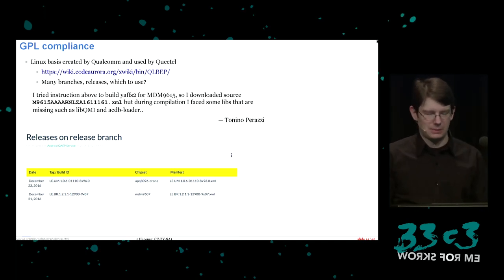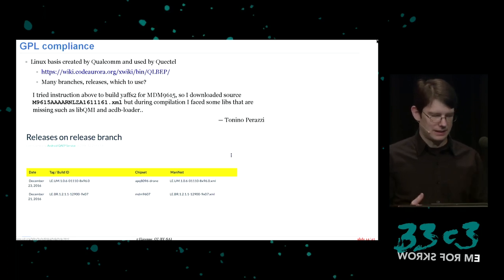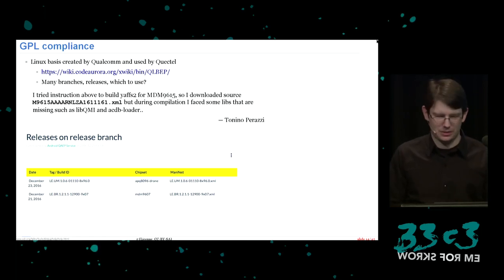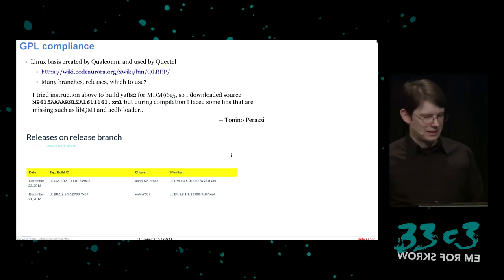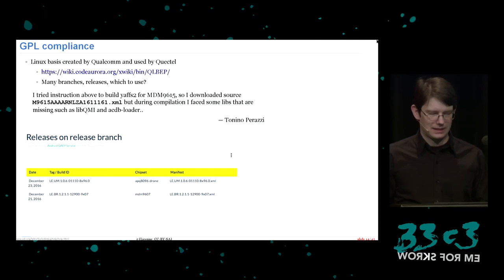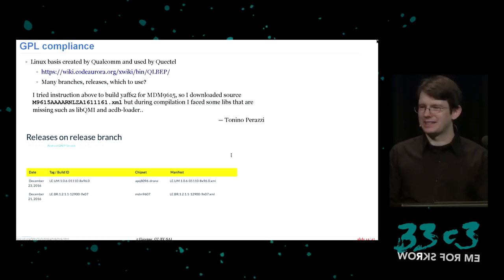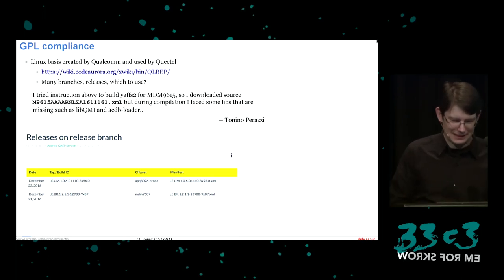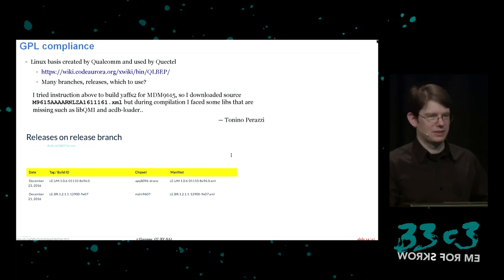Qualcomm's source at Code Aurora is almost completely undocumented — there are hundreds of branches and tags with no documentation on what to use. They have an example version you can build, but someone posted years ago that it doesn't compile and of course nobody ever responded. We started building it anyway, ran into issues, but eventually managed to build some of the code. Meanwhile we asked the modem manufacturer for the complete and corresponding source code.